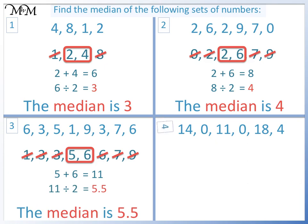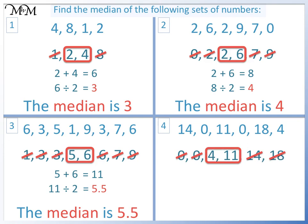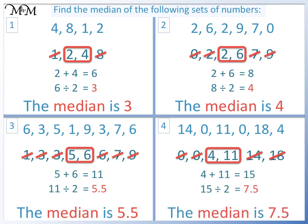Question 4. We put the numbers in order and cross out the numbers on each side. There are two numbers in the centre. 4 plus 11 equals 15. 15 divided by 2 equals 7.5. The median is 7.5.